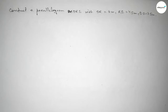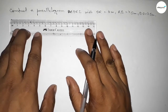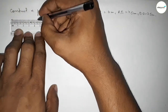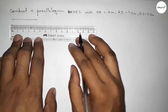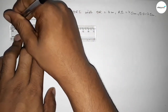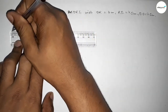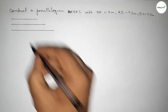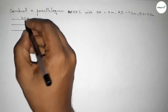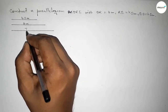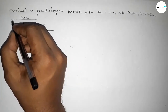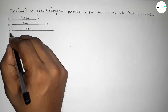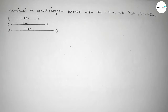First of all, we have to draw all the sides. First, drawing a line of length 4.5 centimeters, then drawing another line of length 6 centimeters, then last drawing a line of length 7.5 centimeters. So this line is RE, this one is OR, and this one is EO.